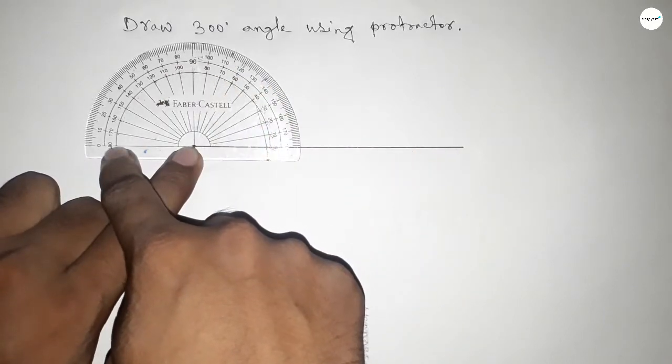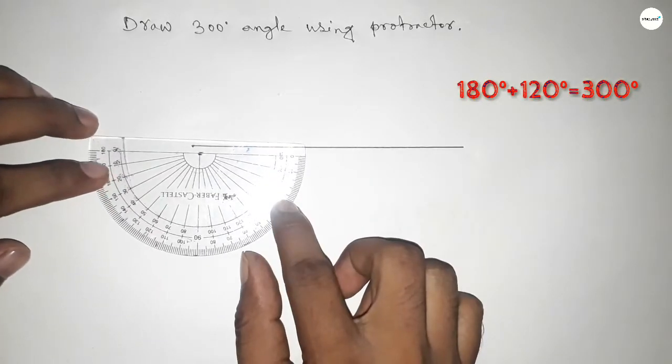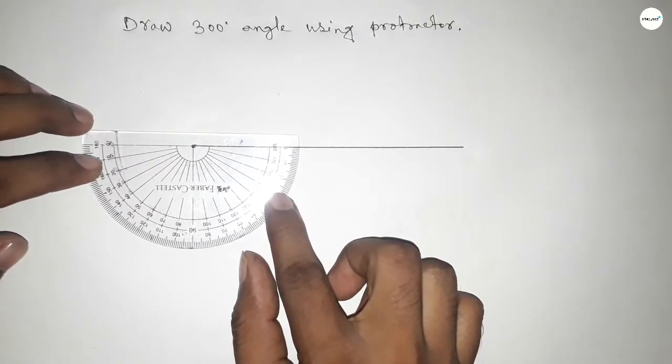up to 180 degrees, but we have to draw a 300-degree angle. So if you add 120-degree angle with 180, then we can get 300-degree angle. So putting the protractor on the line